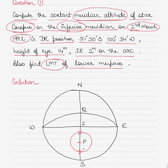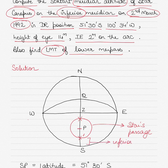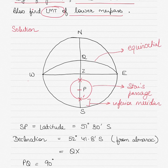Let's start by drawing a diagram that roughly depicts what is given in the question — the star's upper and lower meridian passage. This is the inferior meridian, and the star is at position X dash. This here is the celestial equator, or what we call the equinoctial. I hope you have seen my videos on the rational horizon diagram or the PZX triangle — I'll give you the link in the description. That video will help you understand the rational horizon diagram better.